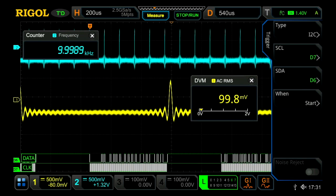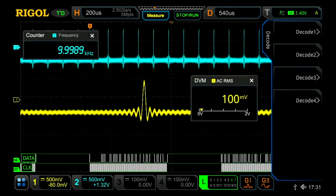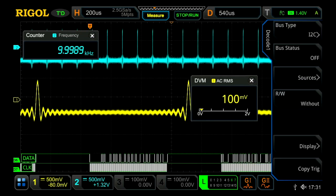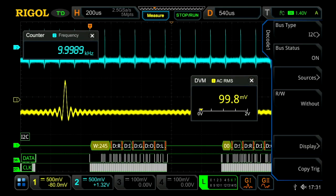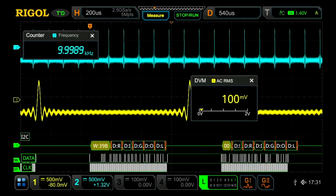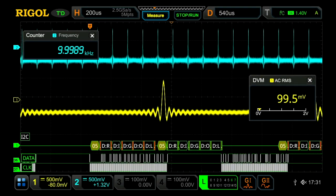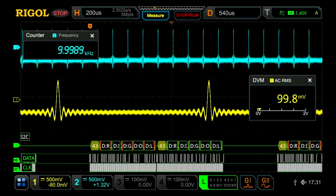We can also then decode the signal. To do this we go into the decode menu and then just turn it on. Currently we have on our screen, once I set this, I'll actually stop this. Currently we have all six instruments that are built into the 7000 series listed. We've got our counter, our waveform generator active on both analog channels, our digital voltmeter, our logic analyzer, and then finally our protocol analyzer.